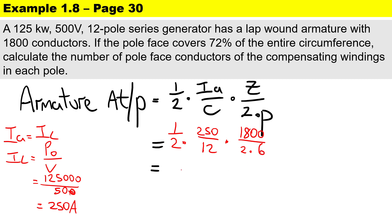Therefore the number of armature ampere turns per pole is 1562.5 ampere turns.